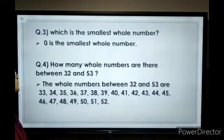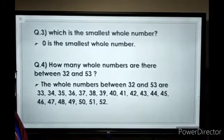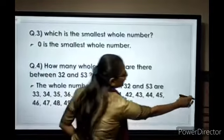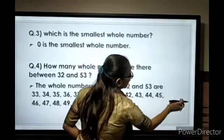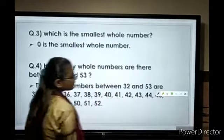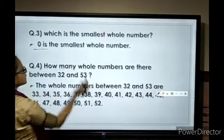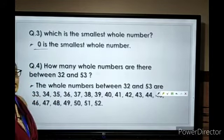Next: Which is the smallest whole number? The smallest whole number is 0. 0 is the smallest whole number.